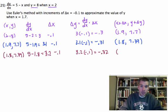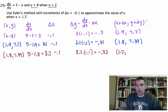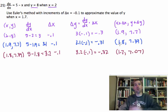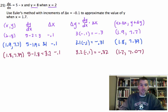And how do I get that last point? Well, I do 1.8 plus delta x, 1.8 plus negative 0.1, which is 1.7. How do I get my new y? I do y plus delta y, 7.39 plus negative 0.32. So when you get done, we want to approximate the value of y when x equals 1.7. We found 1.7. Here's x equal to 1.7. What is the y value at that point? It is this guy right here, 7.07.